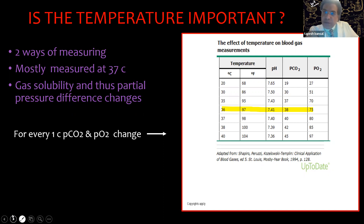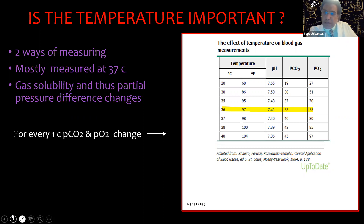Most machines measure ABG PO2 and PCO2 at 37 degrees centigrade and do not correct for hypothermia. Whether we should correct for hypothermia or not, there is no consensus. But the concept should be known to you, as you may alter ventilator settings in patients with raised ICP if you are unaware of the temperature difference and its effect on ABG values.